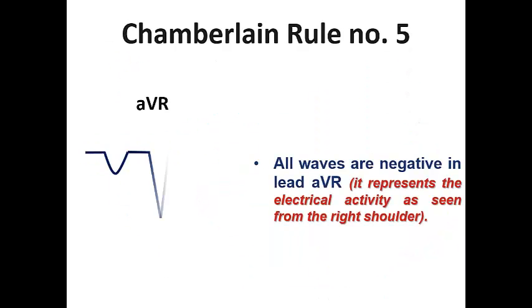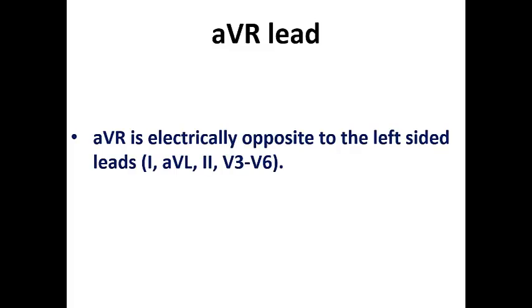That's why AVR is mostly negative in most ECGs. We remember the Chamberlain rule number five, in which all waves are negative in lead AVR, as it represents the electrical activity as seen from the right shoulder of the patient. So in AVR you would see the P wave is negative, the QRS complex is negative, and consequently the T wave is negative and inverted.